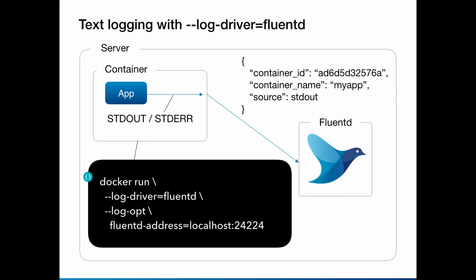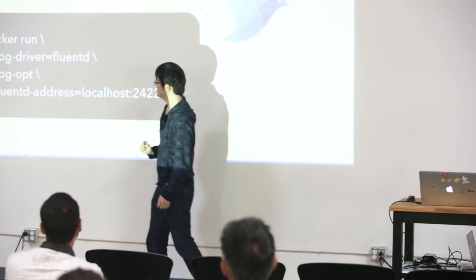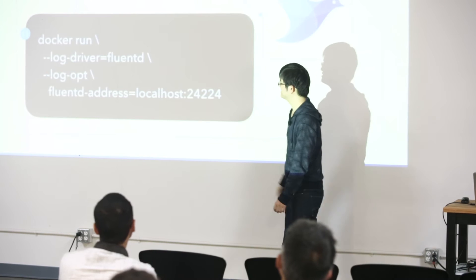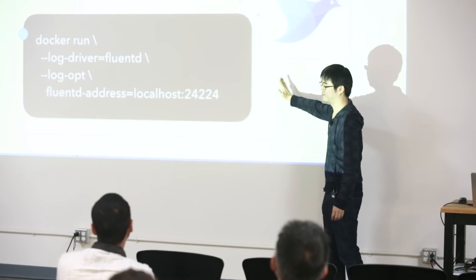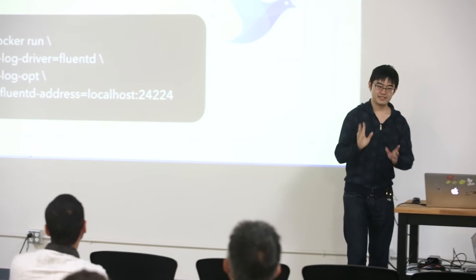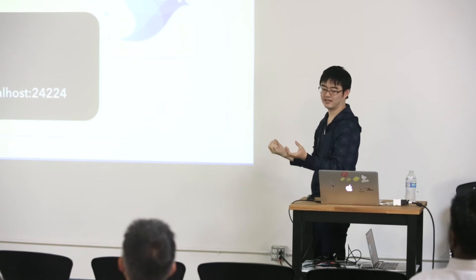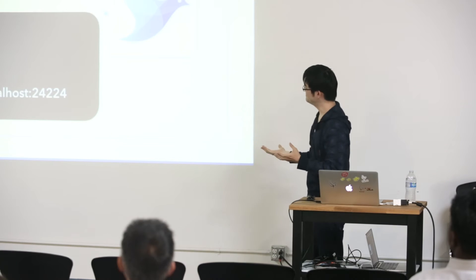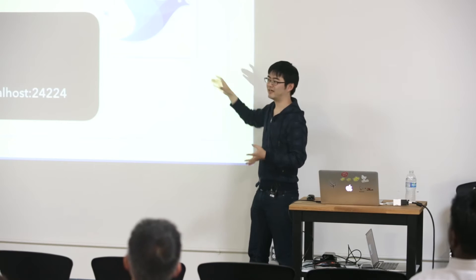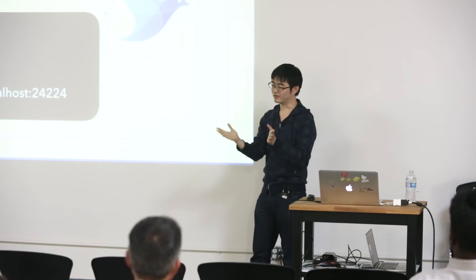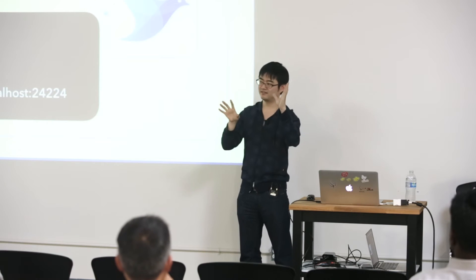I assume you are going to use Docker. If you're using Docker, using Fluentd is actually very easy. Start Fluentd, install via Debian package, RPM, or anything else, and run it. Then add these options to the Docker run command: log driver Fluentd, and the Fluentd address at localhost 24224. If running on a container, you also need to bind the port. With just this configuration, Fluentd will receive the data — the message, container ID, container name, and source such as stdout or stderr. Then you can configure Fluentd so that this message goes to Elasticsearch, Hadoop, or is copied to S3.